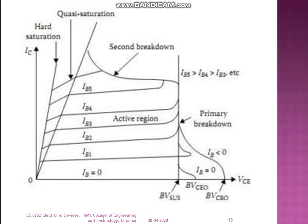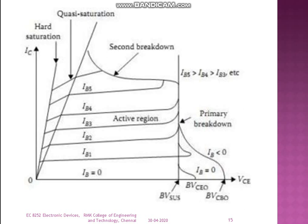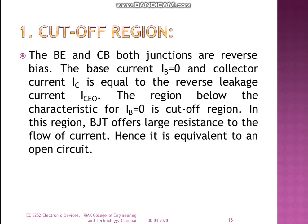One key difference: the active region is larger in the power BJT compared to the normal BJT. In the power BJT, secondary breakdown causes the transistor to move into the quasi-saturation region, and if current is increased further, it goes to the hard saturation region. In the cutoff region, both the base-emitter and collector-base junctions are reverse biased, base current IB equals zero, and the collector current equals the reverse leakage current ICEO. The region below the IB=0 curve is the cutoff region, where the BJT offers large resistance to the flow of current.